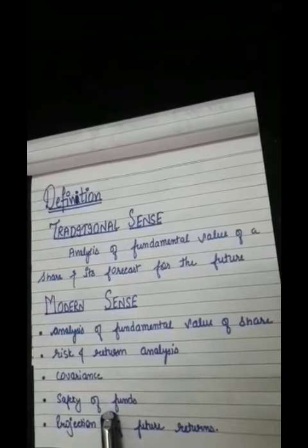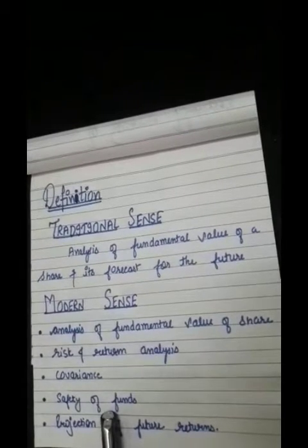The modern sense further includes: second is risk and return analysis depending on the variability of the return; third is covariance, which means how two assets move in relation to each other; fourth is safety of funds, whether funds invested in different kinds of securities are safe or not; and fifth is projection of future returns, meaning estimation of future returns such as dividend or interest.